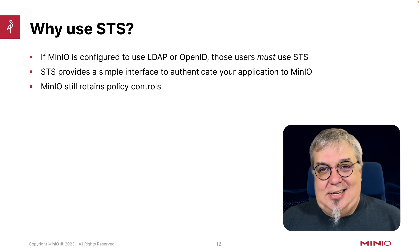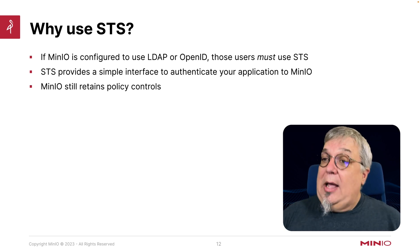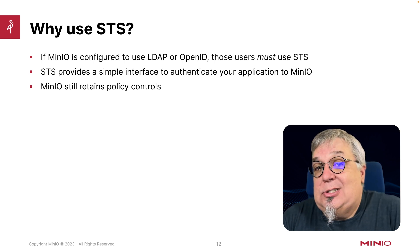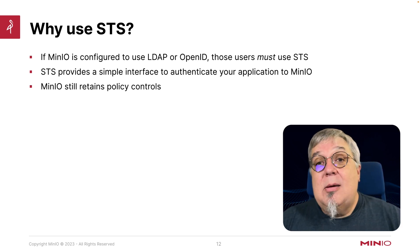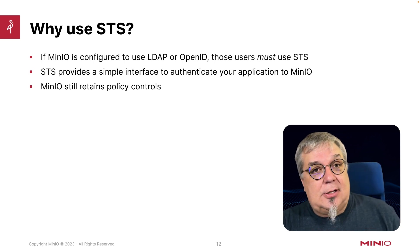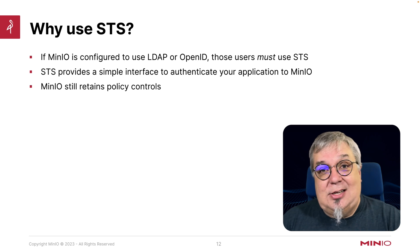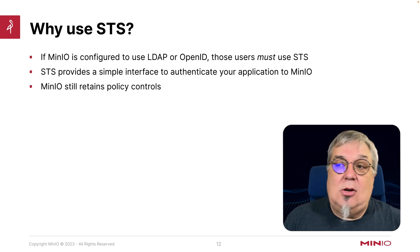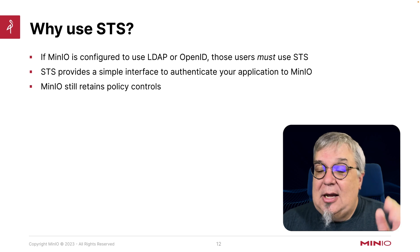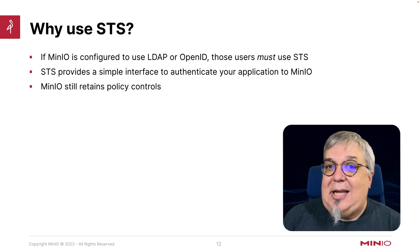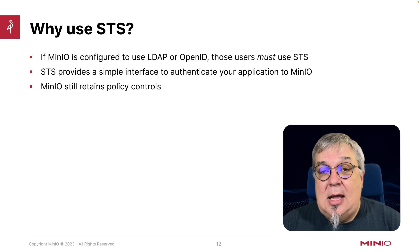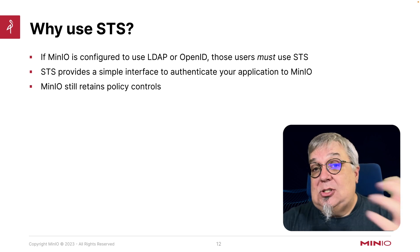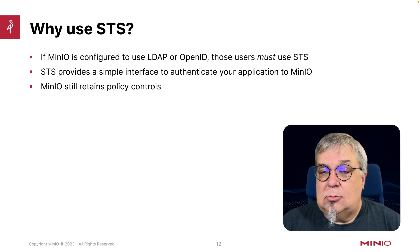So why use STS? If MinIO is configured to use OpenID or LDAP, those users have to use STS to log in through the application. If you're going through the console with LDAP you can log in as usual, but you won't get that with an application written in Python. You need to call the STS service to get the authentication to then perform actions in MinIO. STS gives you a simple interface to authenticate your application to MinIO with whatever credentials you need, and MinIO still retains policy controls. You can send in a reduced set of policy actions, but that set must be a subset of whatever policy is assigned to the user.